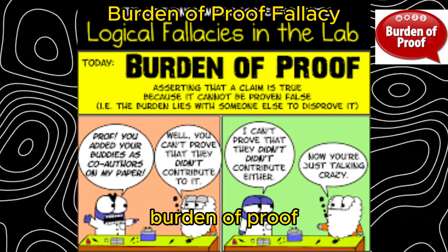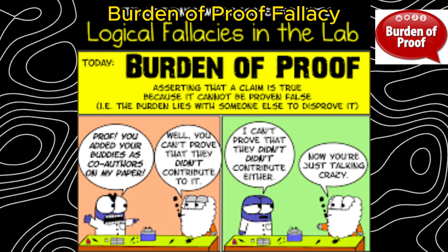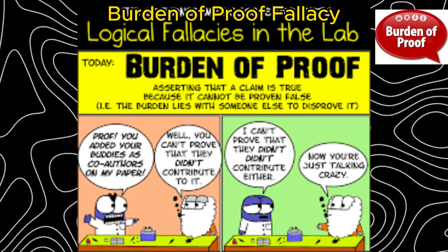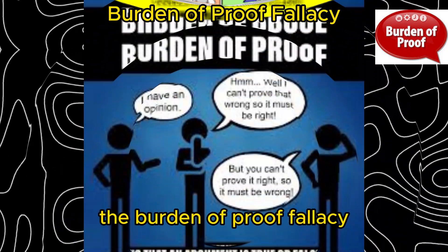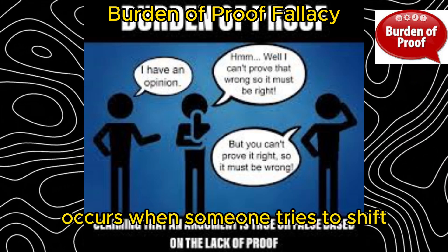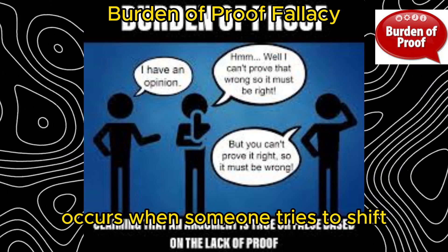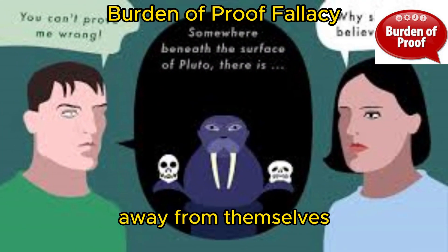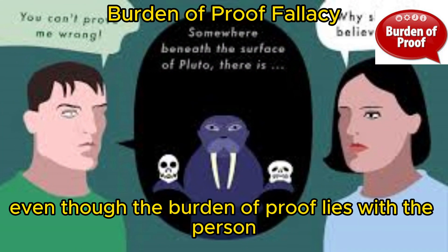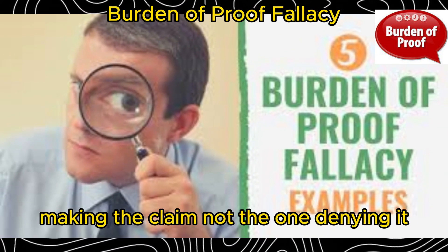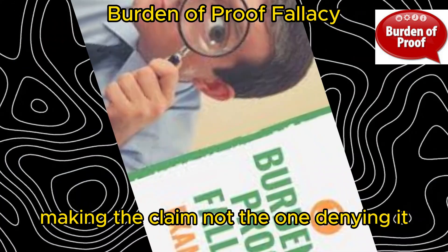Burden of proof fallacy. The burden of proof fallacy occurs when someone tries to shift the responsibility of providing evidence away from themselves, even though the burden of proof lies with the person making the claim, not the one denying it.